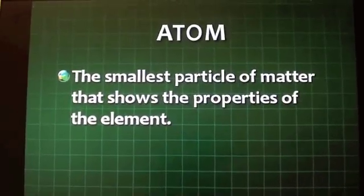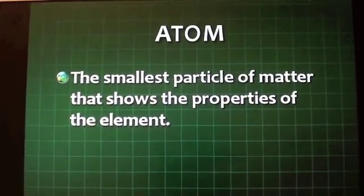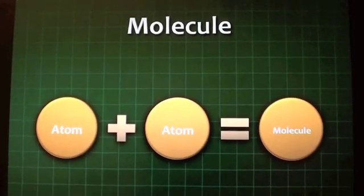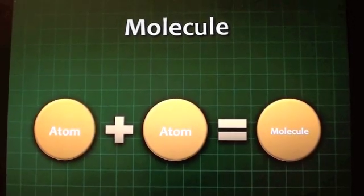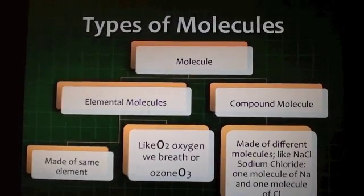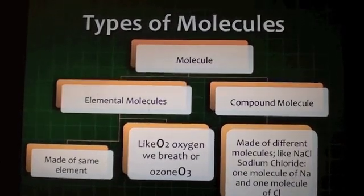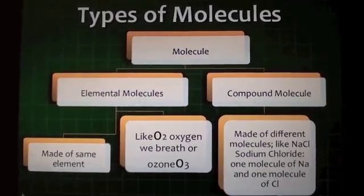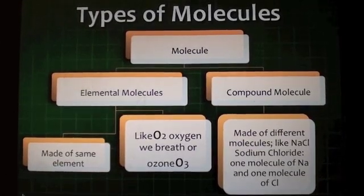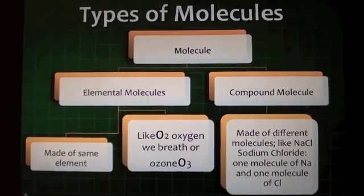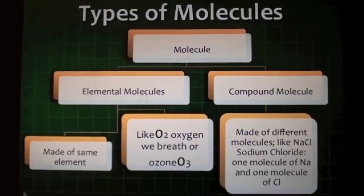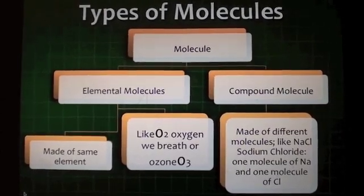An atom is the smallest particle of matter that shows the properties of the element. The combination of two atoms makes a molecule. Types of molecules include elemental molecules and compound molecules. Elemental molecules are made of the same element, like O2 — oxygen we breathe — or ozone, O3, which occurs after rain.